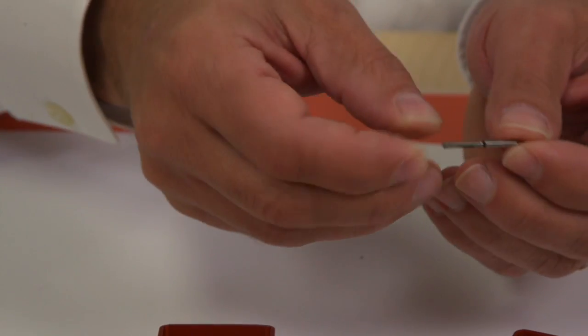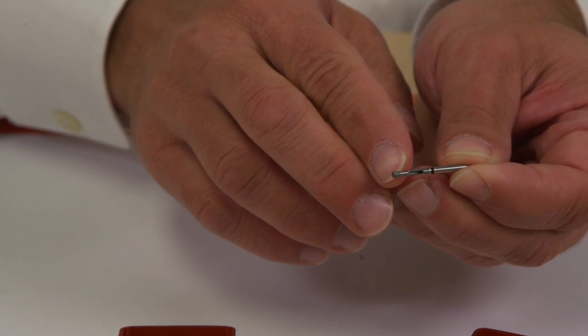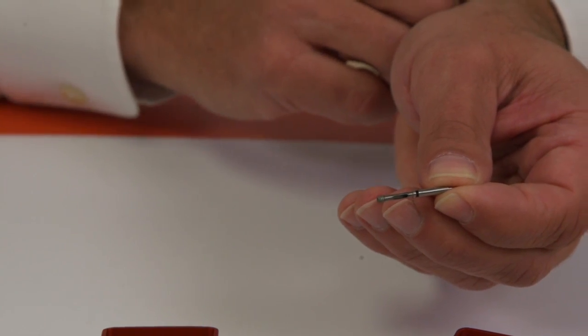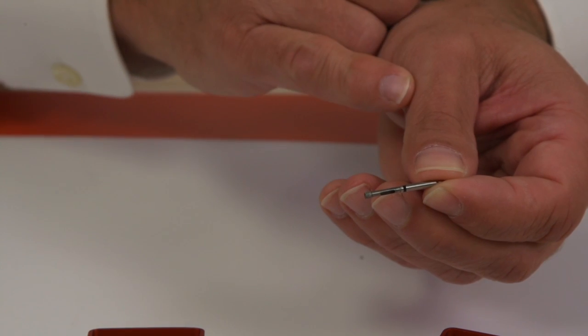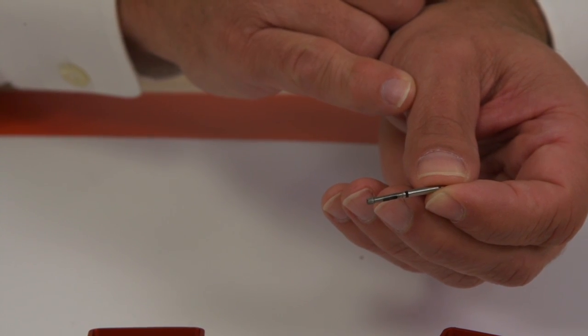For removal of endodontic posts, the hollow drill has diamonds on the outside as you'll be coming in contact with metal. Drill down and expose about a millimeter or two of the endodontic post.